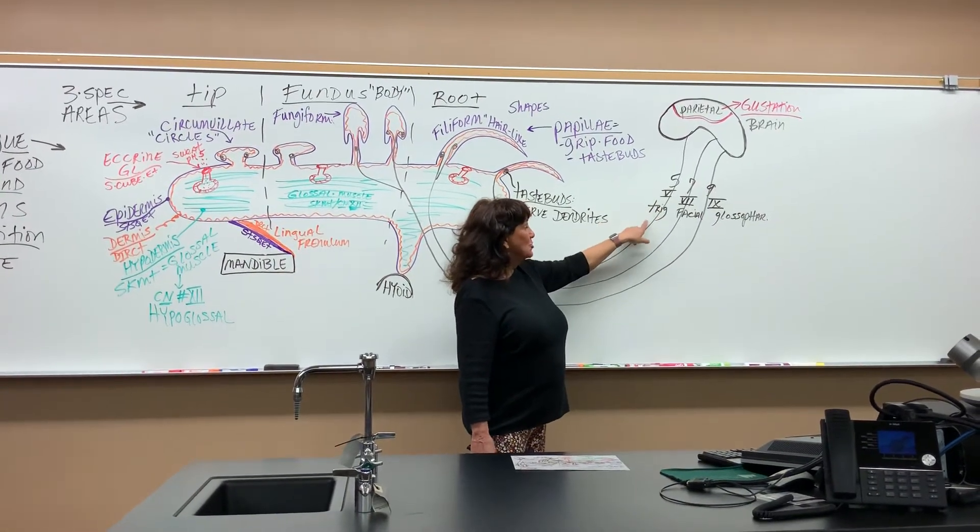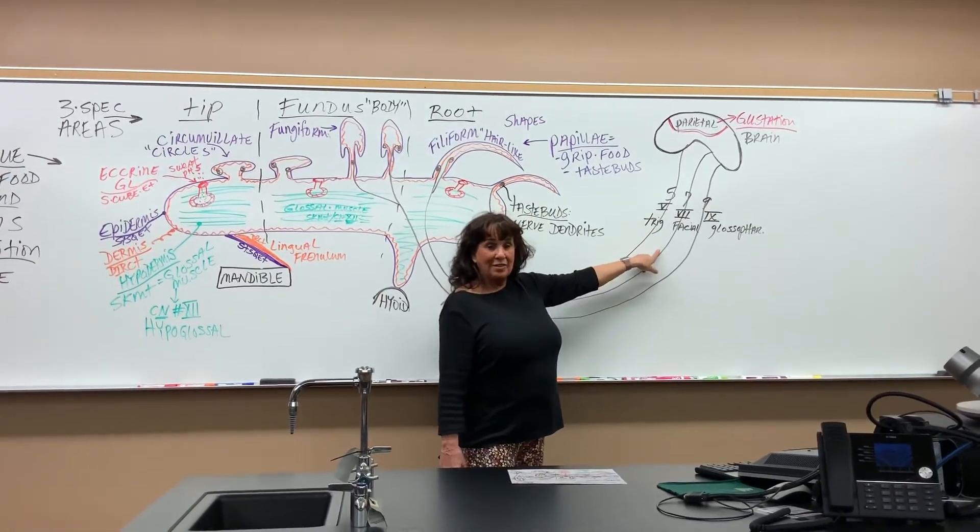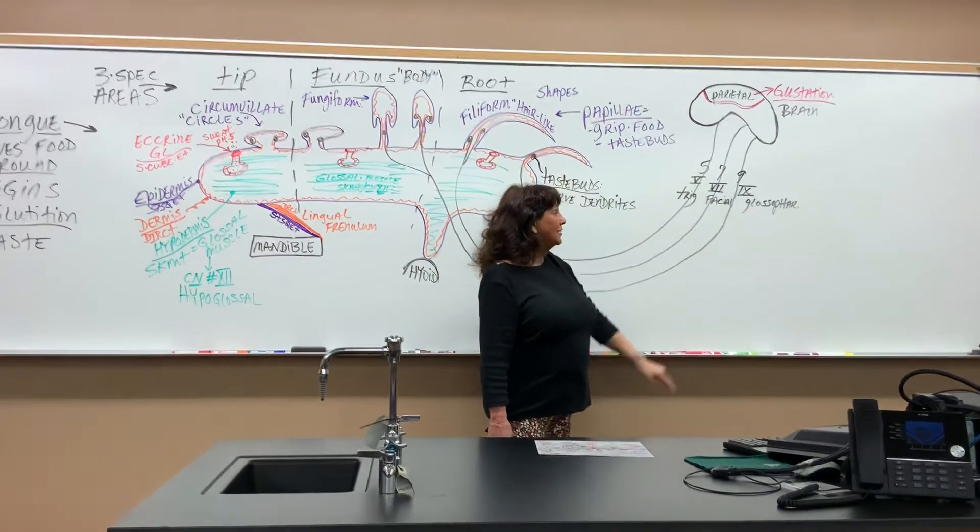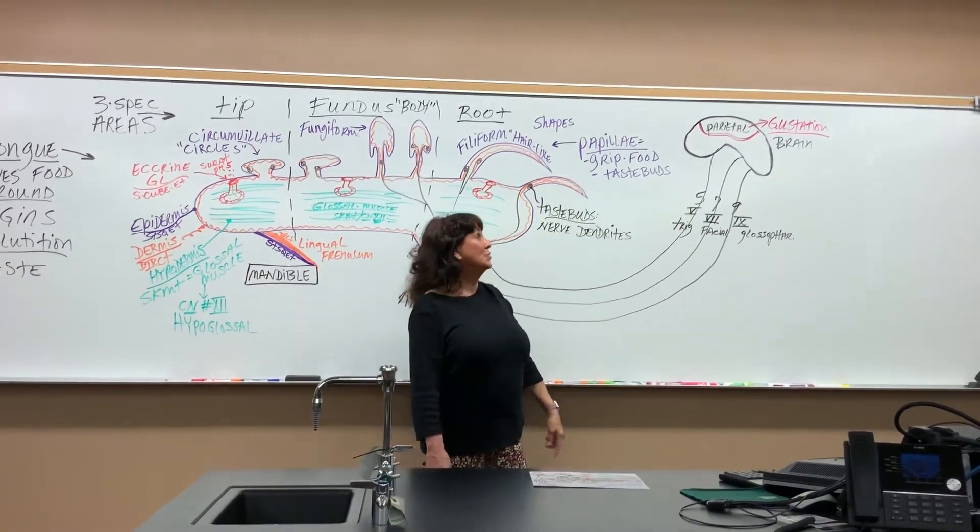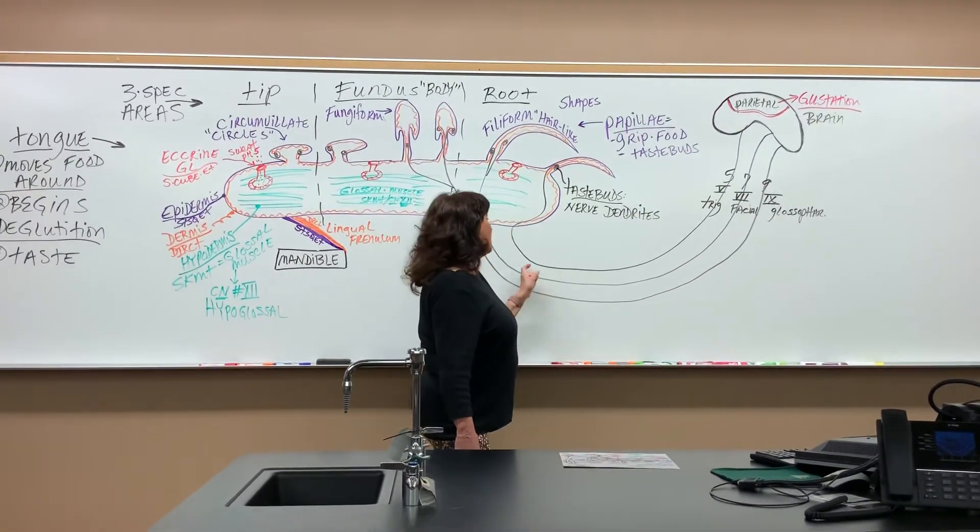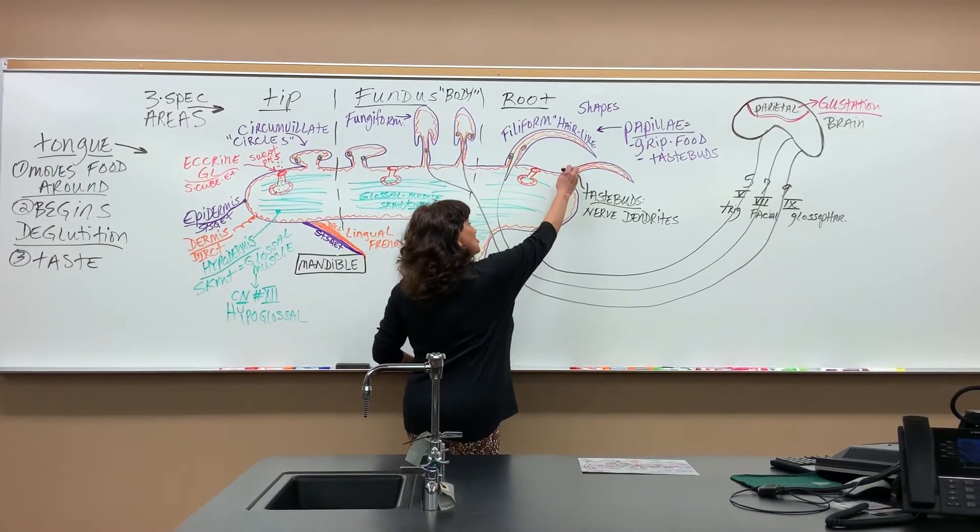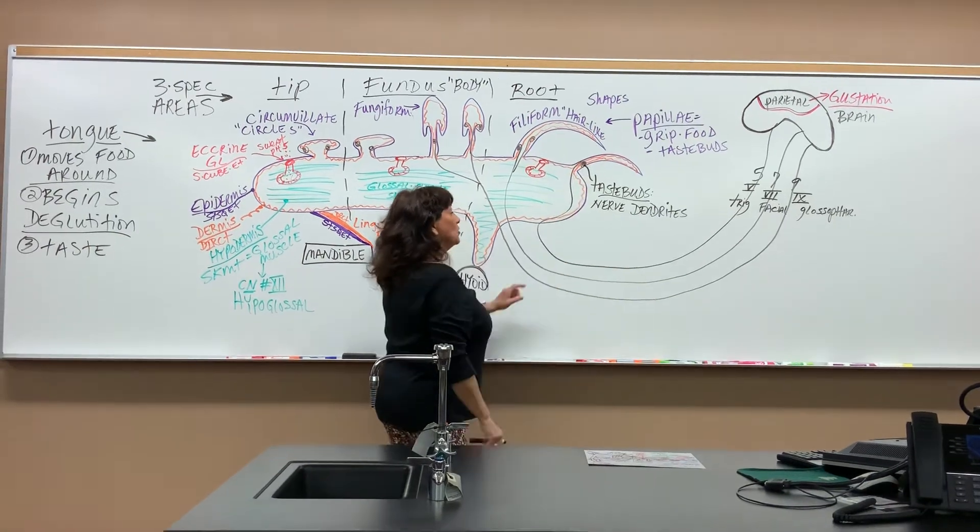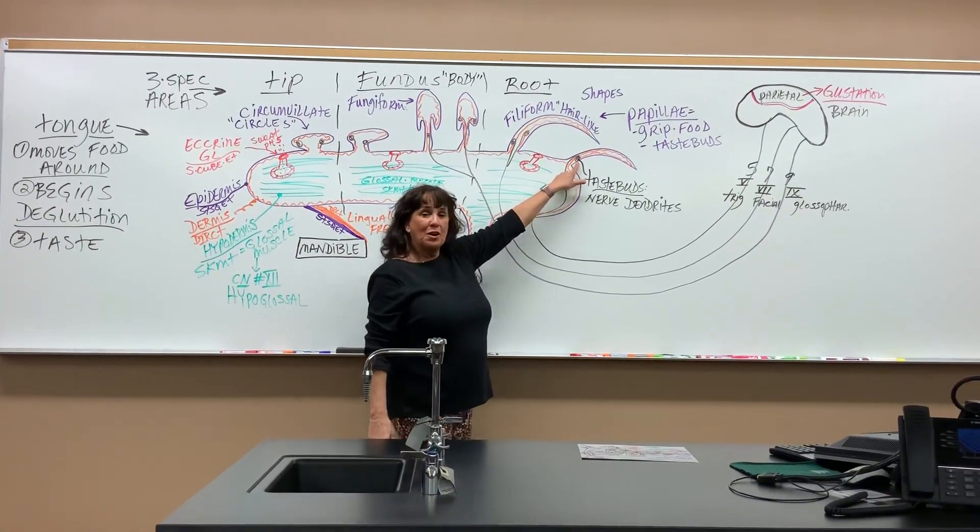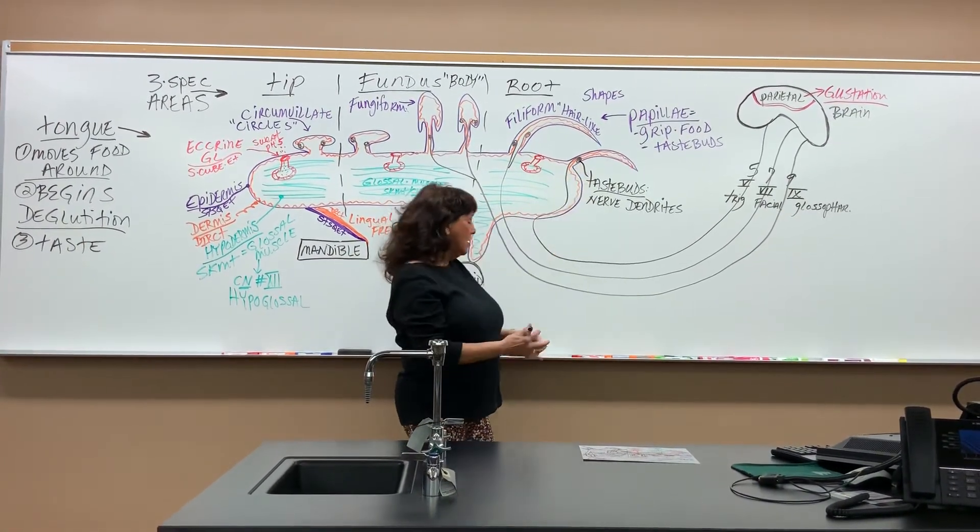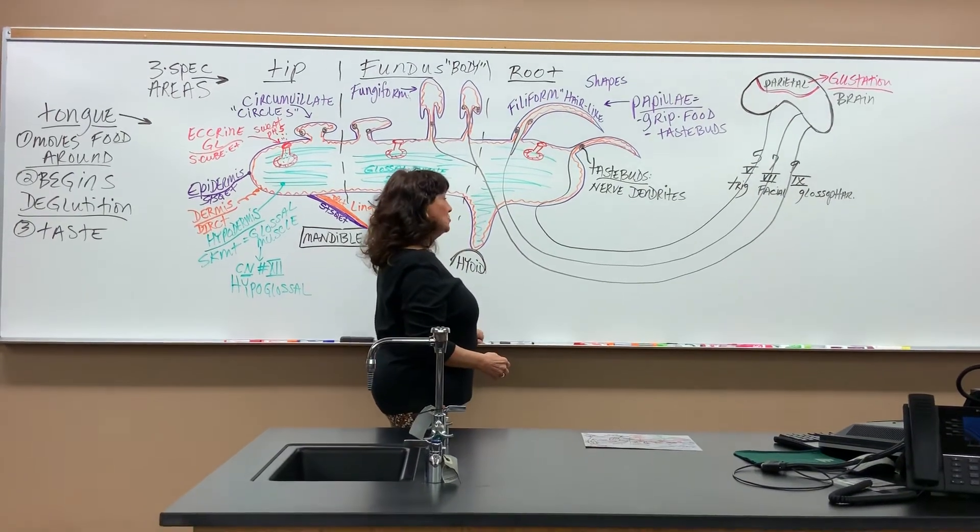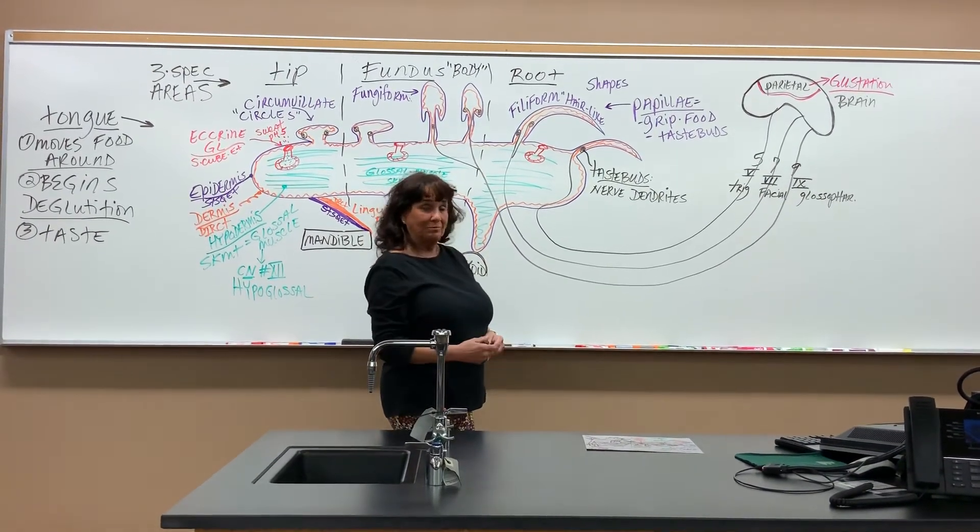Cranial nerve five, the trigeminal, number seven, the facial, and number nine, the glossopharyngeal. Those come down and come into the tongue, and then they make these little round structures in the dermis of the skin, and those are your taste buds. Those are the dendrites waiting for your food to come in and stimulate them.